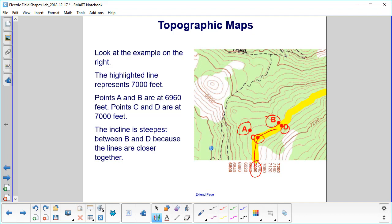You can see they're right on the highlighted line, and here's A and B at 6,960.